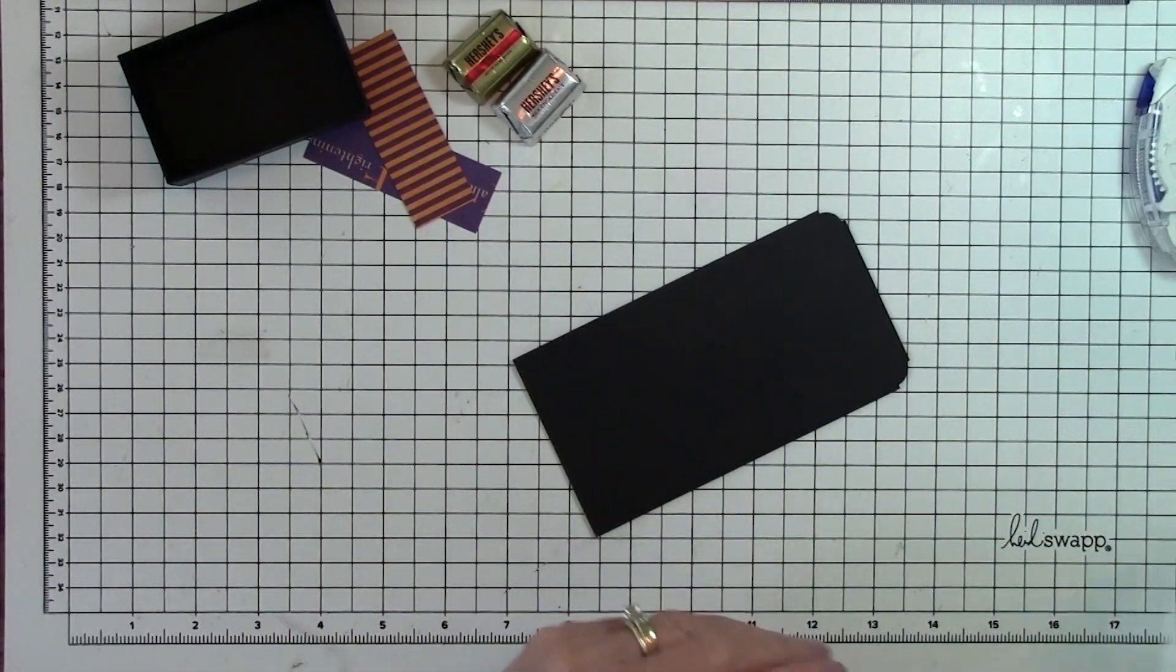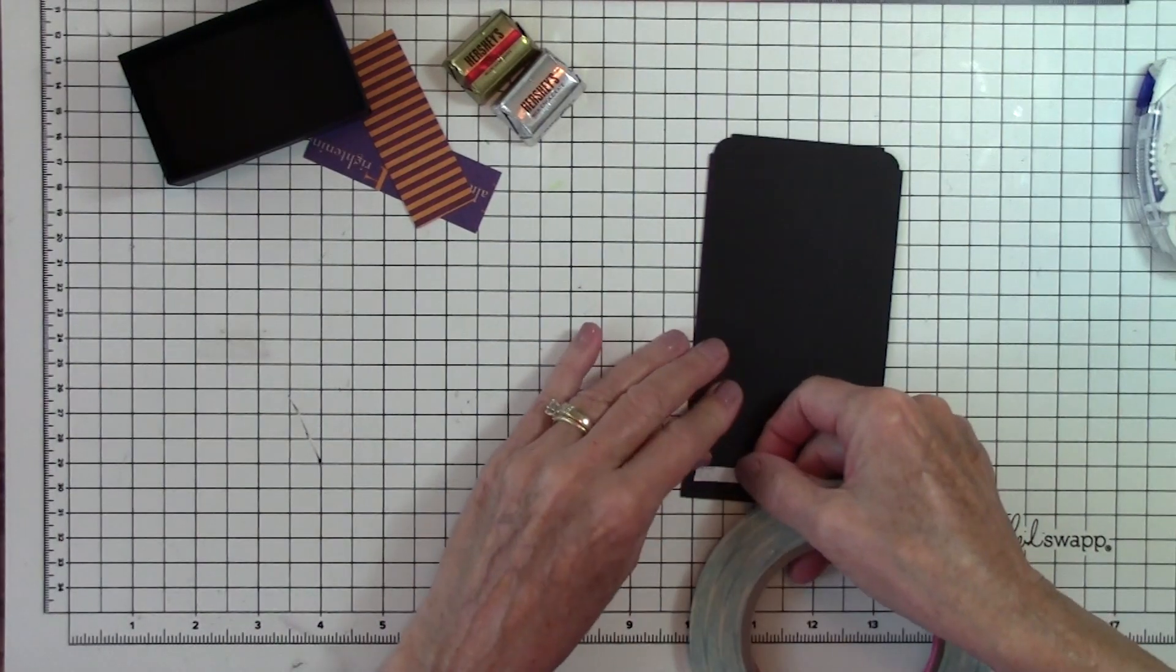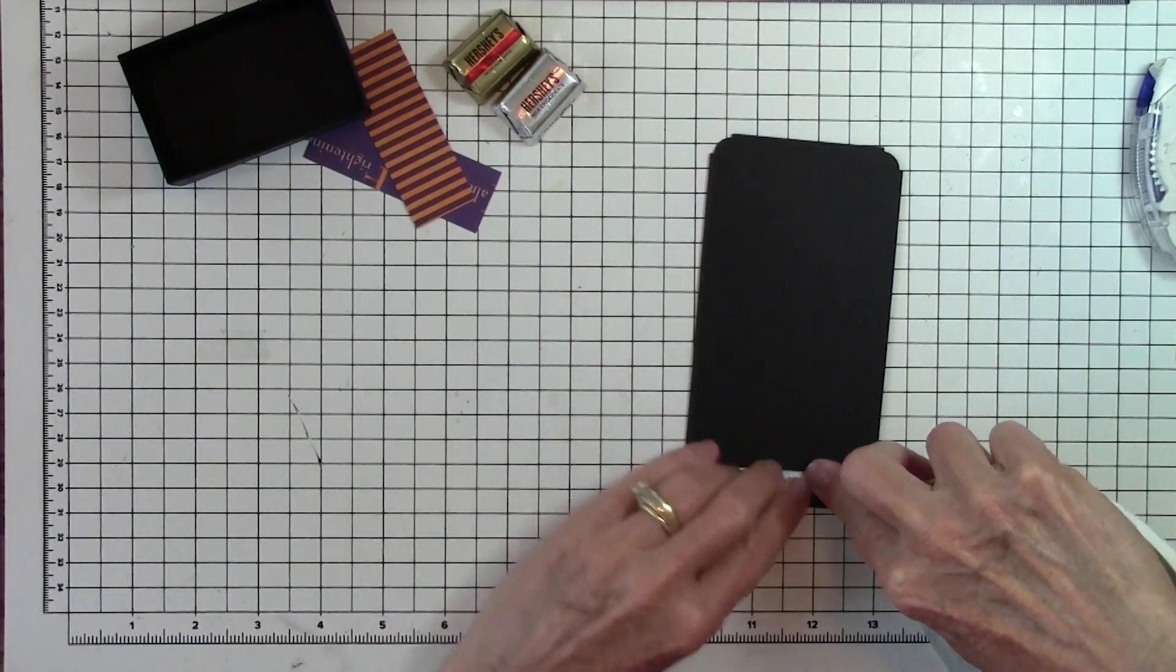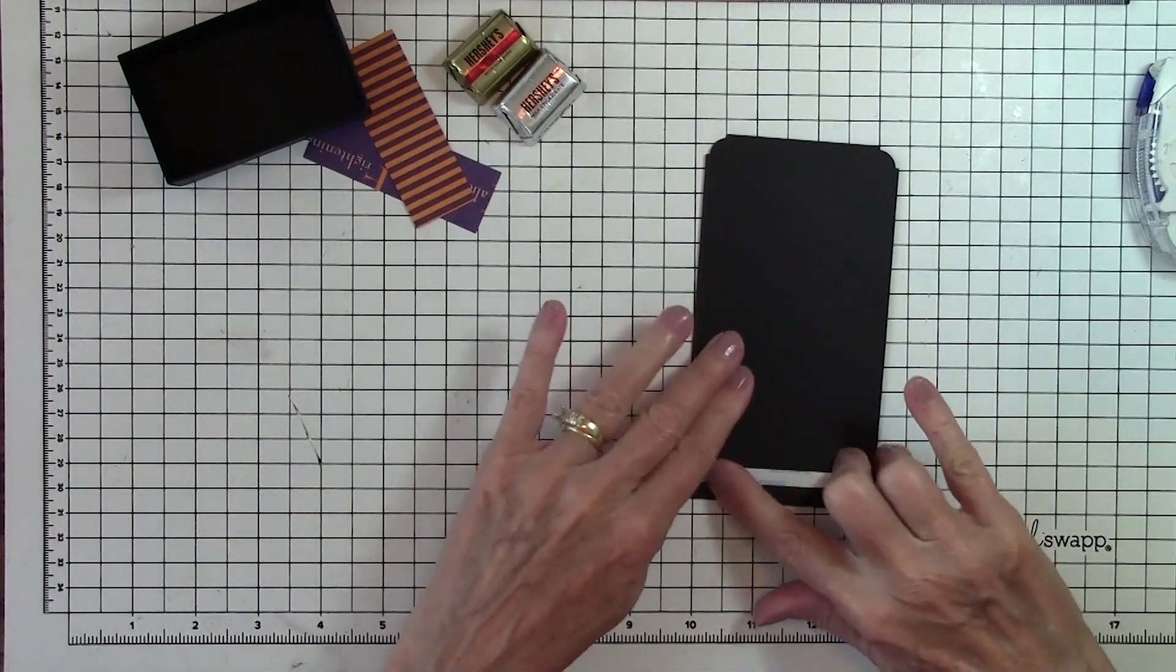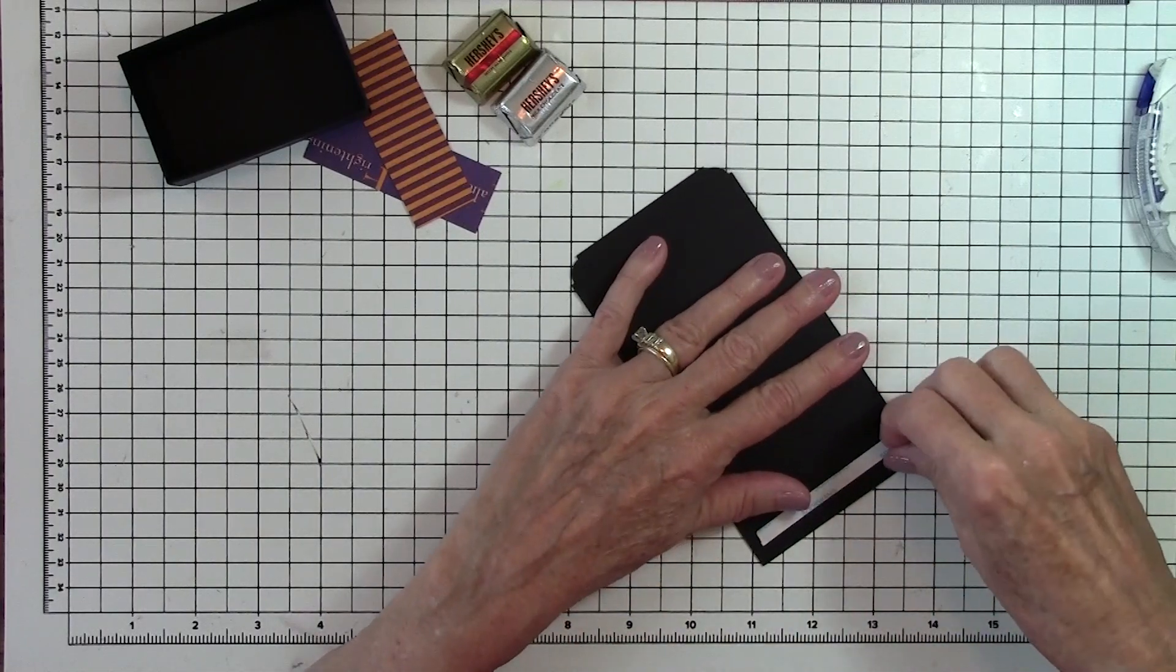Press it firmly down. Now we can take some more score tape and put it on the bottom edge. I like to use the score tape because it's a little bit stickier, stronger, to hold this on your box.